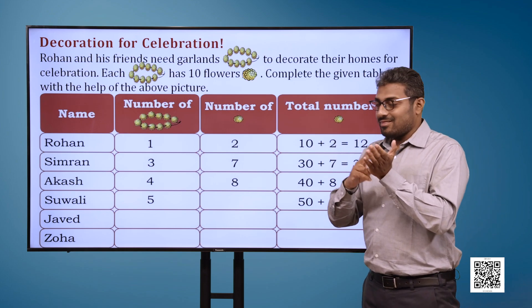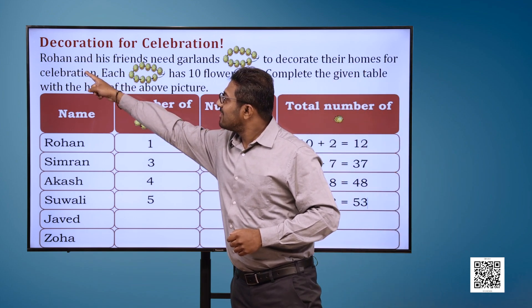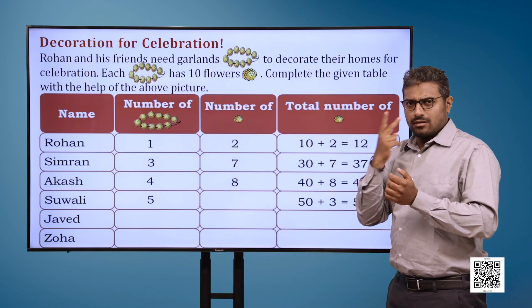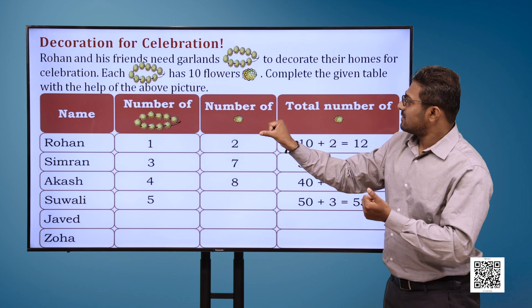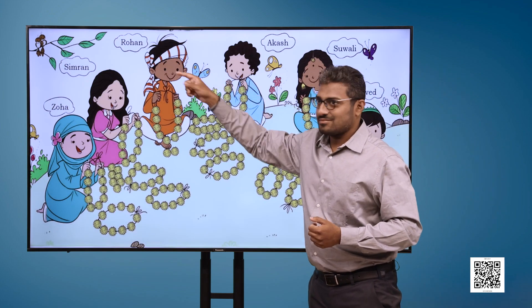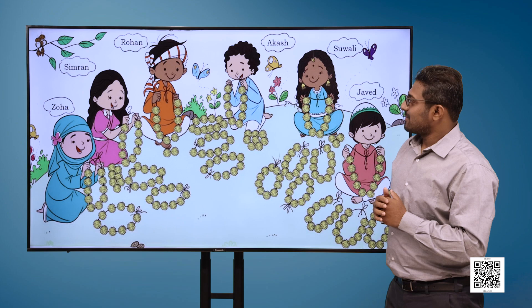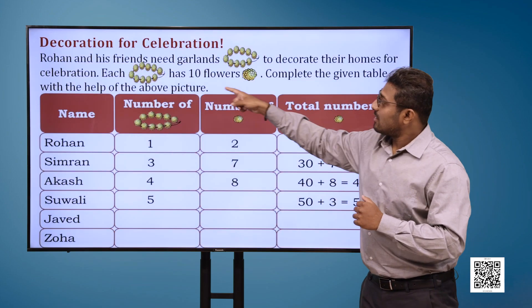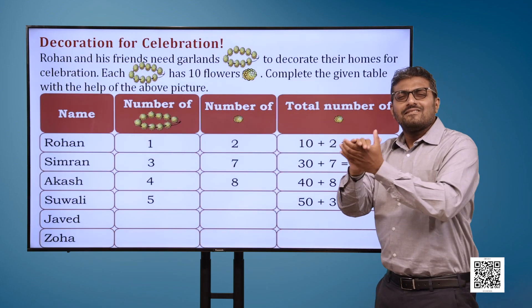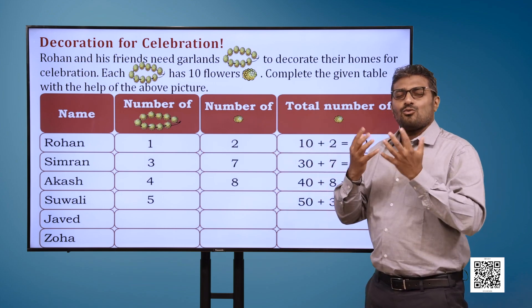Decoration for Celebration. Rohan and his friends need garlands to decorate their homes for celebration. Each garland has 10 flowers. Complete the given table with the help of the picture.